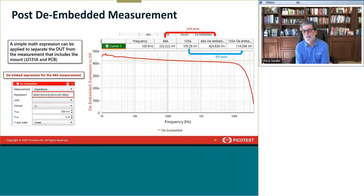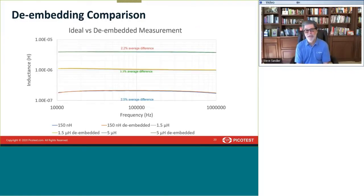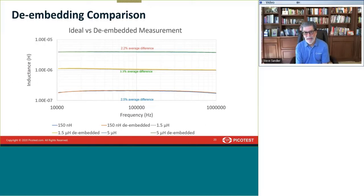The error without de-embedding is about 24% for a 400 nH inductor, and up to 79% for a 5 µH inductor. After de-embedding across three different inductor values — 150 nH, 1.5 µH, and 5 µH — the average error is about 2–3%, independent of the inductor value, indicating a systematic calibration accuracy issue rather than a value-dependent problem. This accuracy is well within acceptable range for most applications.